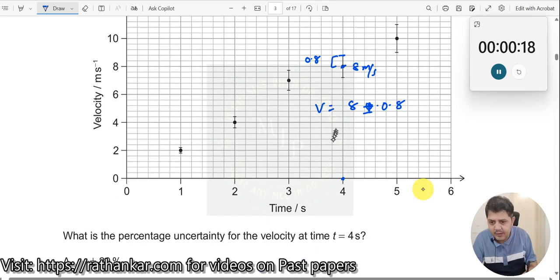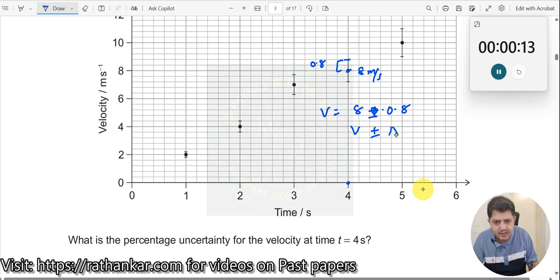So, which means what is he asking? Percentage uncertainty. So, this is your v plus or minus delta v here.